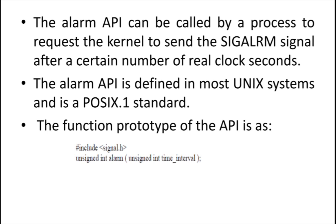What is the function prototype of alarm API? You can see here it uses the data type unsigned int. The argument you are giving is the time interval, because whenever the particular amount of time is elapsed, the alarm API should be called. Time interval is the argument. You can set the time for five minutes, ten minutes, or whatever you want — you can specify the time interval. Once the particular time is elapsed, the alarm should be called to wake up the process.